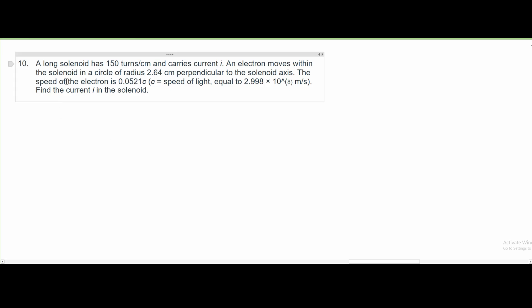For number 10, we are told that a long solenoid has 150 turns per centimeter and carries a current I. We're not given I, but we know it carries a current. An electron moves within the solenoid in a circle of radius 2.64 centimeters perpendicular to the solenoid axis. The speed of an electron is given as 0.0521c, c being the speed of light, and that equals 2.998 times 10 to the 8th meters per second.